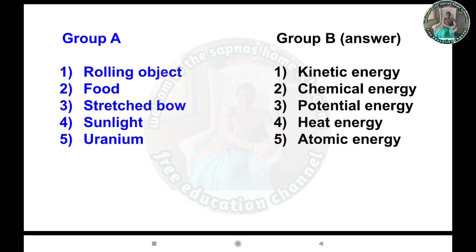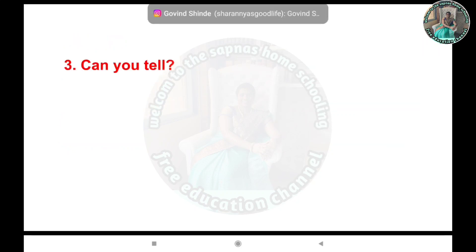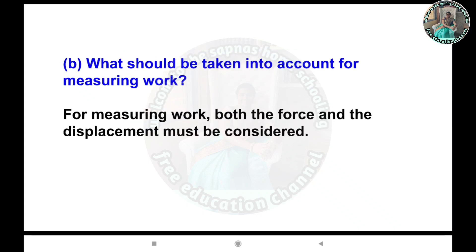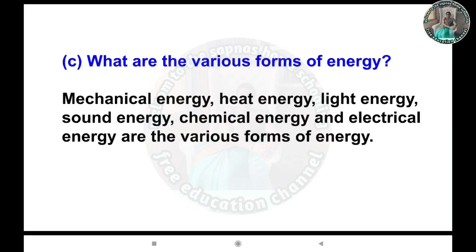Question 3: A) When can we say that displacement has taken place? When the position of any object changes, then we can say that displacement has taken place. B) What should be taken into account for measuring work? For measuring work, both the force and the displacement must be considered.